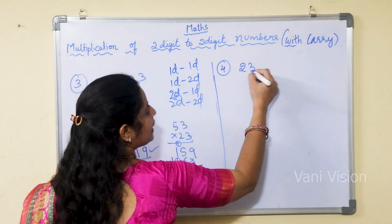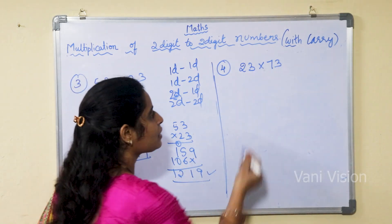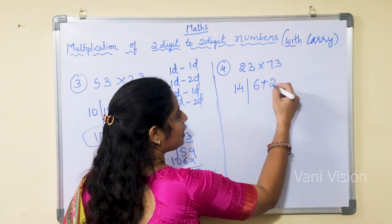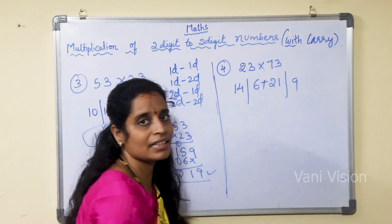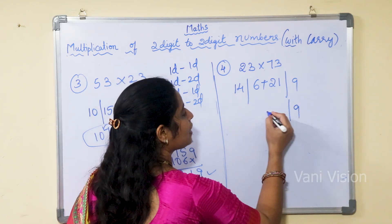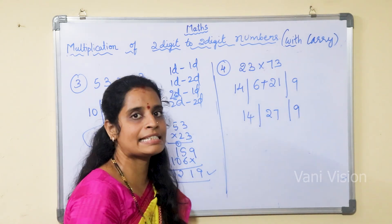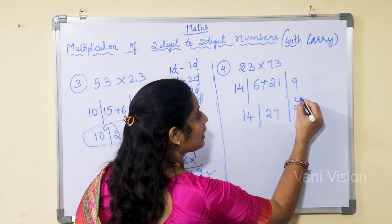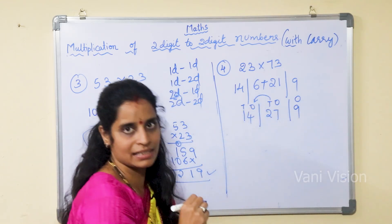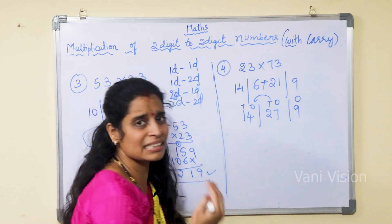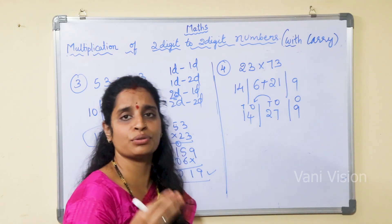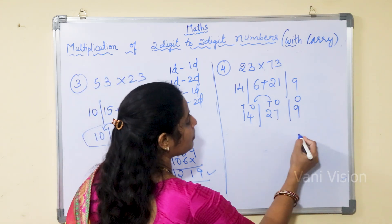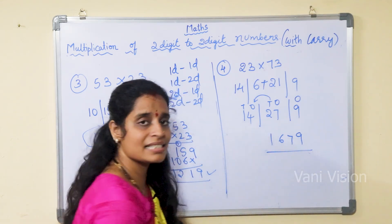Now the number is 23 into 73. What should I do first? 2 sevens are 14. Then 2 threes are 6. Then 3 sevens are 21. Then 3 threes are 9. Writing 9 as it is, then 27, then 14. Now we have to balance the numbers. Balancing means the tens place numbers will go and add up with the ones place number. The ones place number we write as it is — we have already learned this in additions and in the first multiplication video for 2 digit to 1 digit and 3 digit to 1 digit. Balancing method is useful for both additions and multiplications. So the answer is 9, 7, 6, 1 — that is 1679.